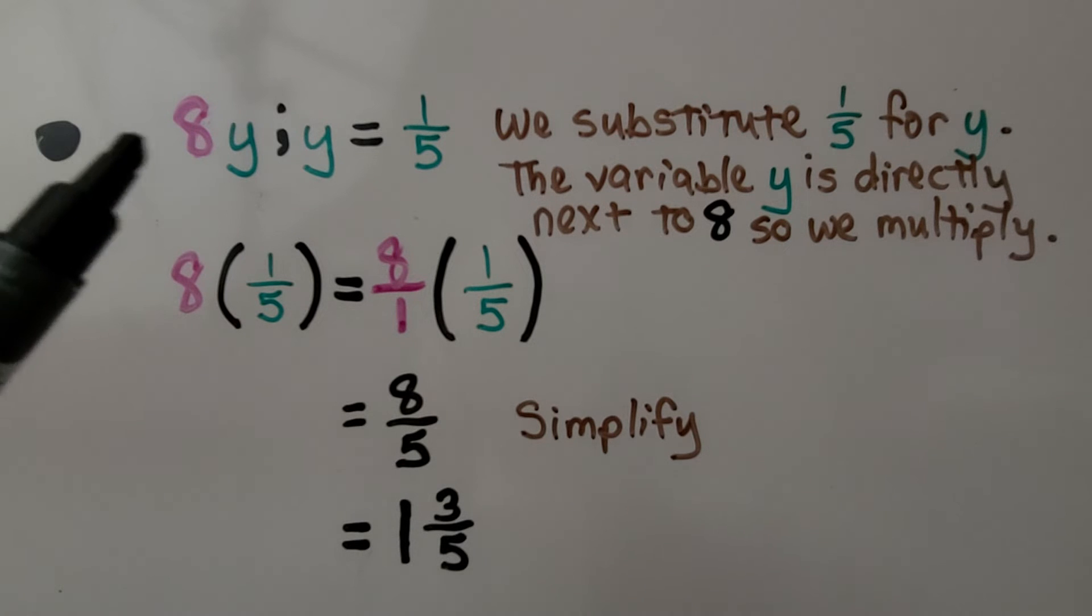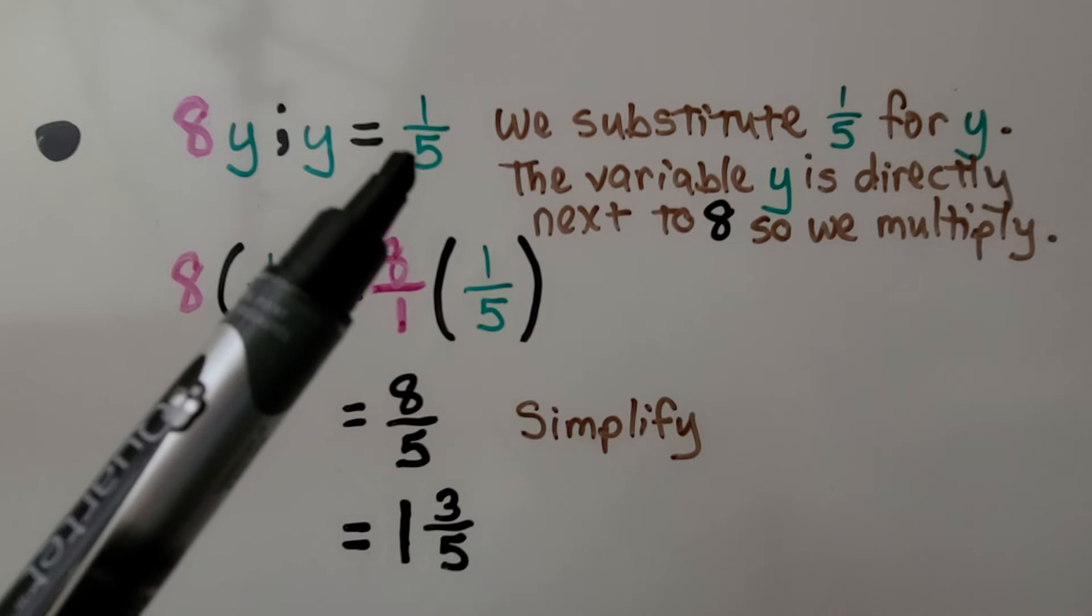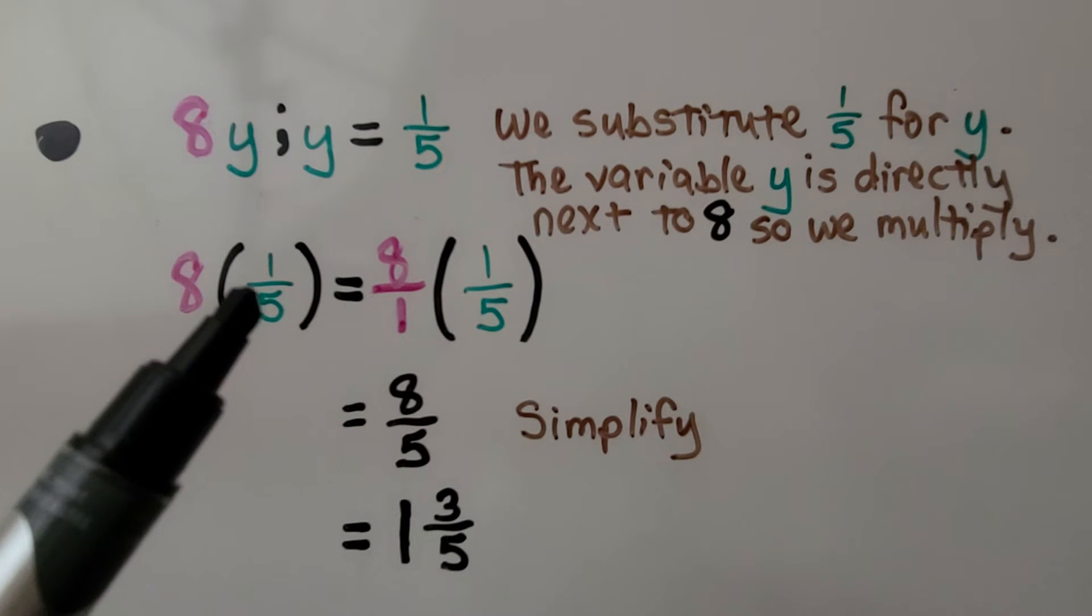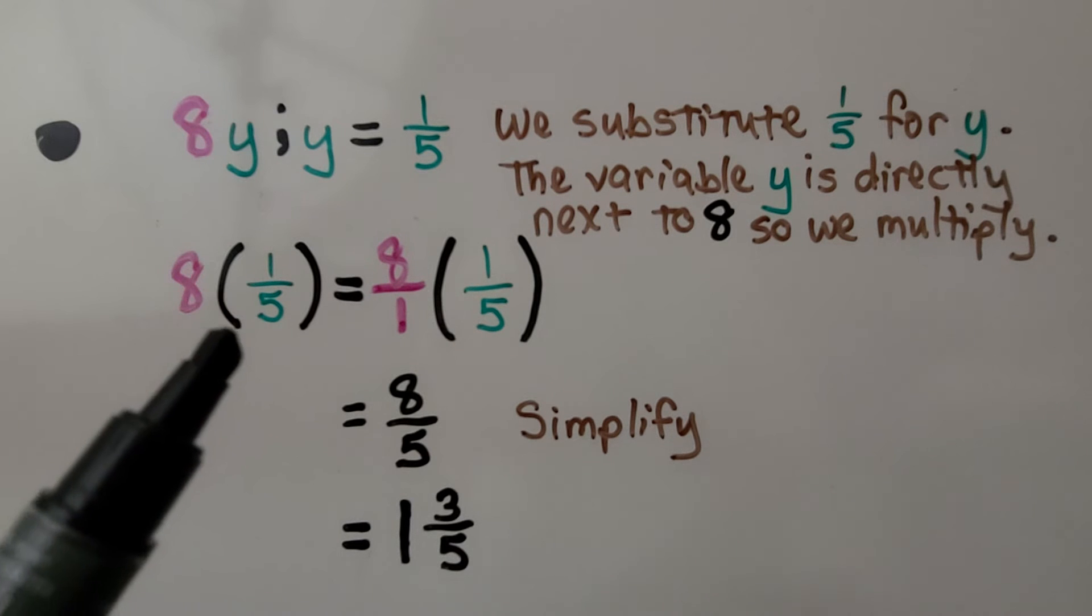Here we have 8y. It's telling us that y is equal to 1 fifth, so we substitute 1 fifth for the y. And the variable y is directly next to the 8, so we multiply.